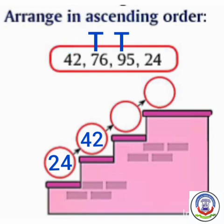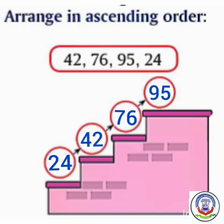Now from the remaining numbers, which number is smallest? We will first see the 10s place. The numbers are 7 and 9. Which number is smallest? Here, 7 is smallest. So we will write 76 next after 42 in the circle. Now remains 95. So we will write 95 last in the circle as it is the largest number.